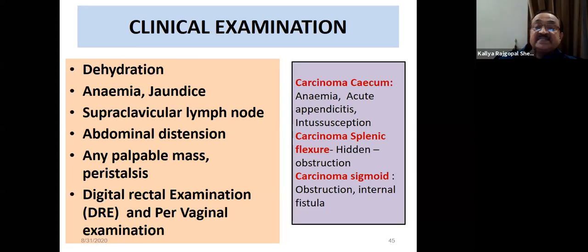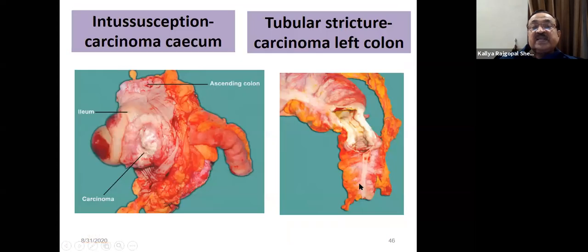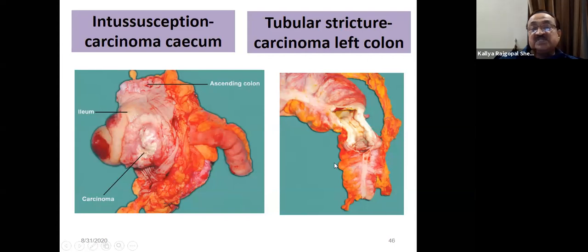Carcinoma of the splenic flexure is called the 'hidden colon' — when you open the abdomen, this is one area difficult to access unless specifically looked for. It's important to inspect both the splenic flexure and sigmoid carefully. A case is shown: terminal ileum, an obstructing growth, and ascending colon — intussusception due to carcinoma of the cecum. Tubular strictures of the left colon are also illustrated.